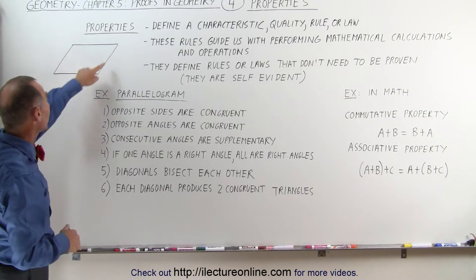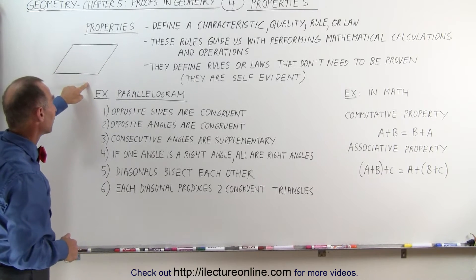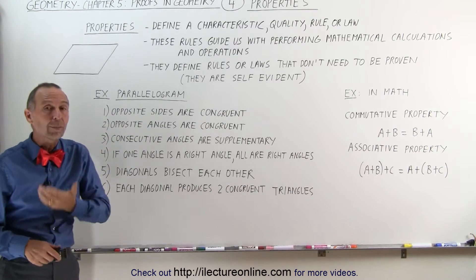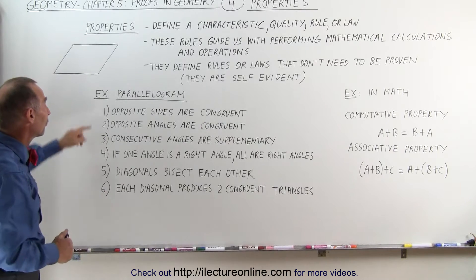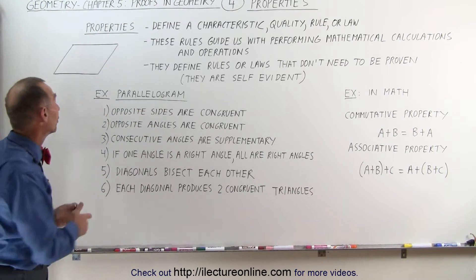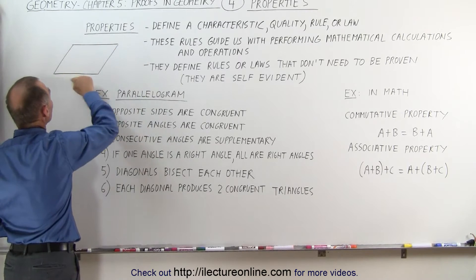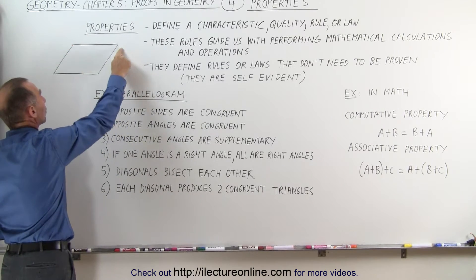As an example, here's a picture of a parallelogram. What are the properties of parallelograms? First of all, opposite sides are congruent. This side is congruent to this side, and this side is congruent to this side.